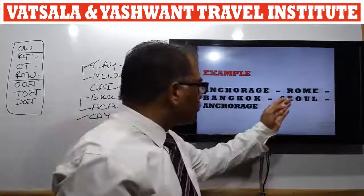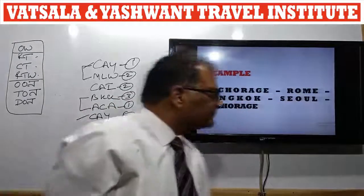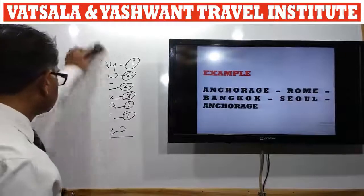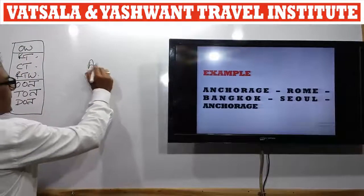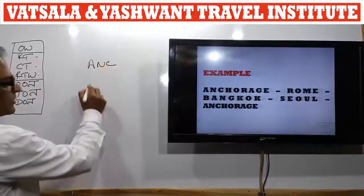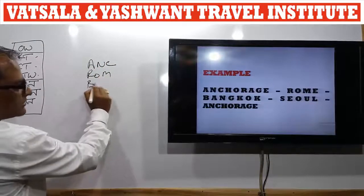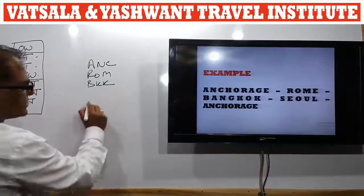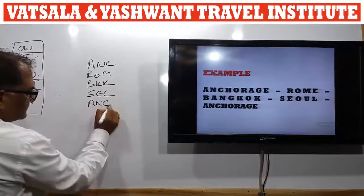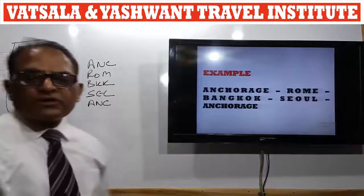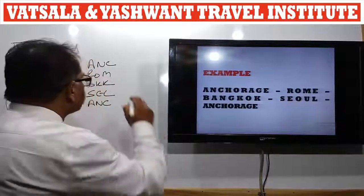Example 2 — the itinerary is: Anchorage → Rome → Bangkok → Seoul → Anchorage. First, we will identify the areas.